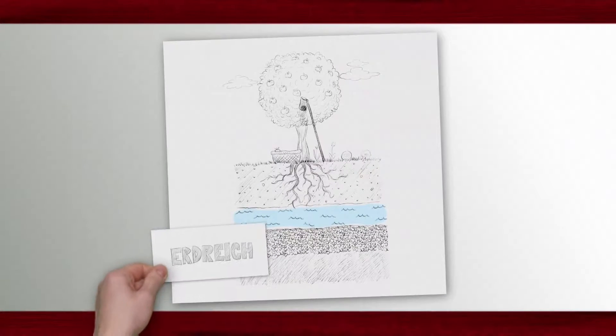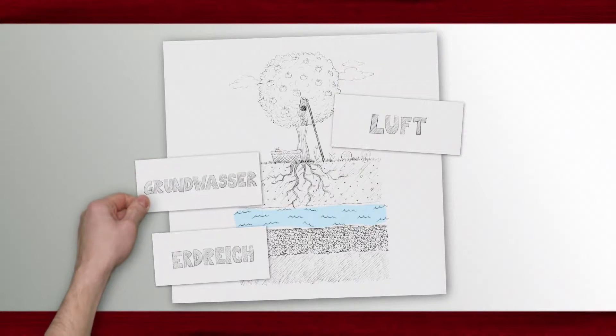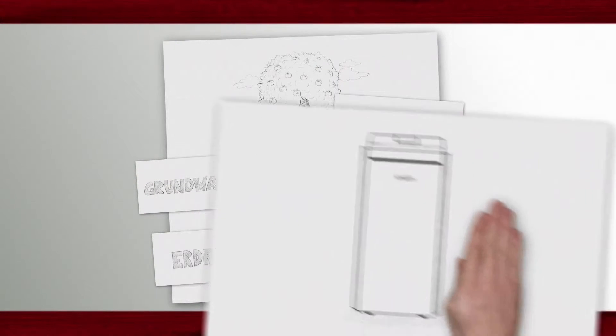The heat of the Sun is stored in the soil, the air, and the groundwater. For each source of energy there is a special heat pump.